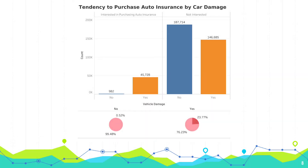Car damage is another important variable, and the result is very obvious. There is almost 0% probability of buying auto insurance for customers who have not had their vehicle damaged in the past. In contrast, customers who have had their vehicle damaged in the past have a 24% probability of purchasing auto insurance.